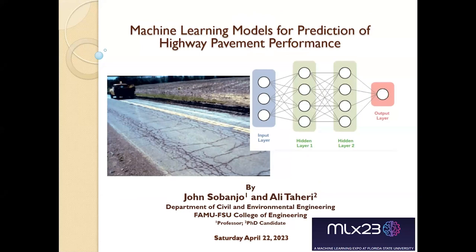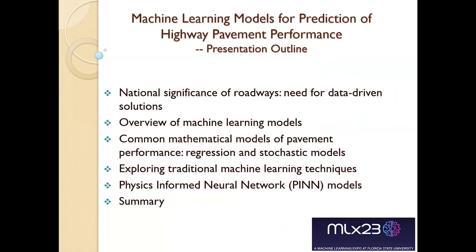What I'm going to talk about today will be aimed at a general audience, but you're going to see some technical content. The outline covers: how significant roadway issues are in the US, an overview of machine learning models, how we currently use mathematical models for pavement performance — mostly regression and stochastic models — traditional machine learning techniques, and then the new approaches being recommended, followed by a summary.